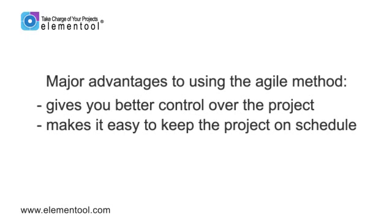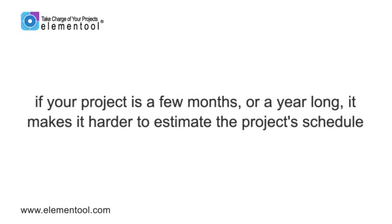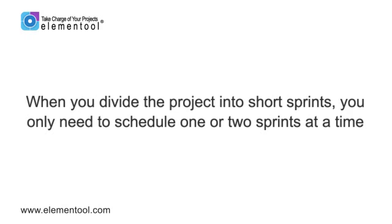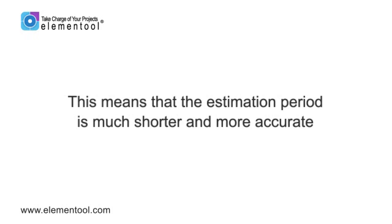It makes it easy to keep the project on schedule. If your project is a few months or a year long, it makes it harder to estimate the project's schedule. Who can predict what might happen six months from now? When you divide the project into short sprints, you only need to schedule one or two sprints at a time. This means that the estimation period is much shorter and more accurate.